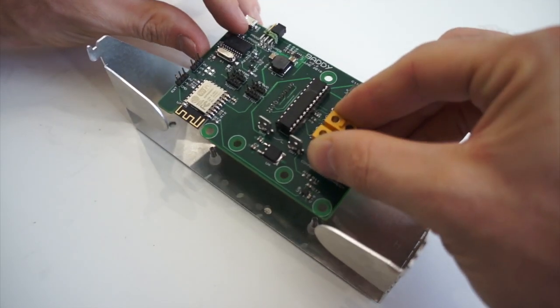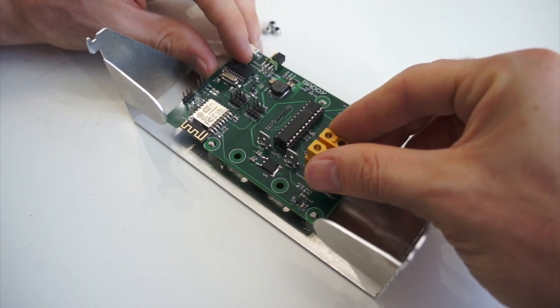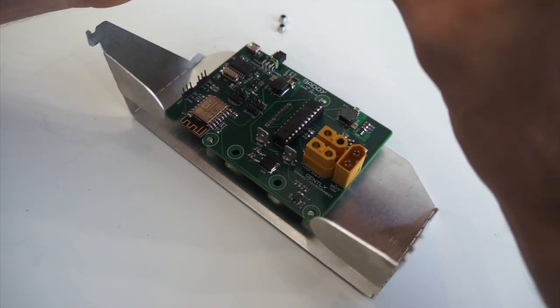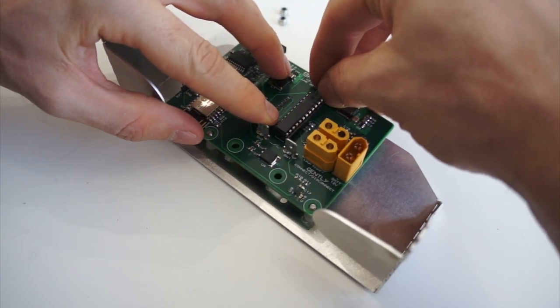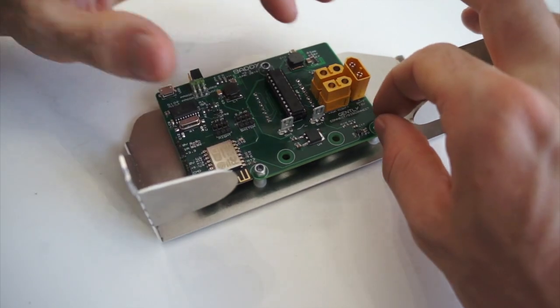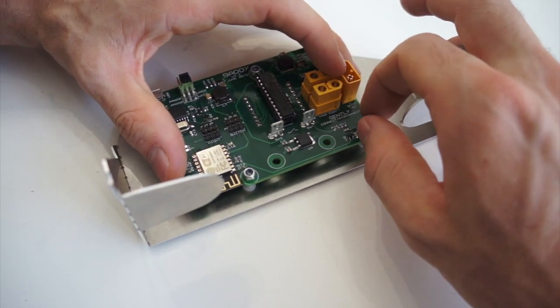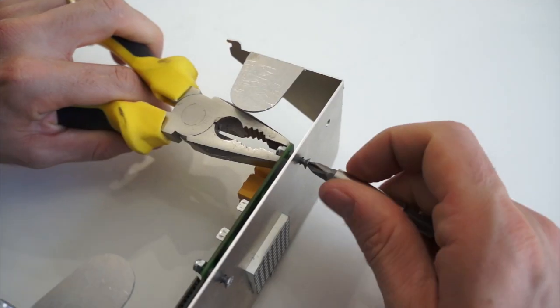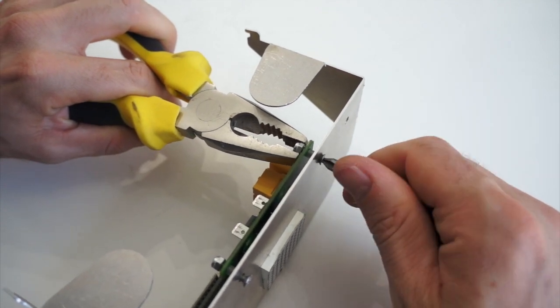Put your PCB on the structure, then take your nuts, insert them, start to screw them. Then grab your pair of pliers and screw.